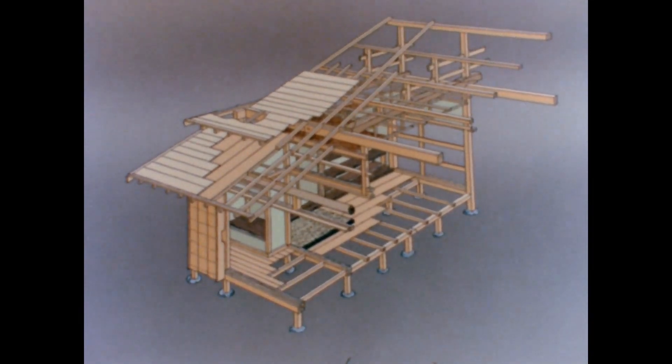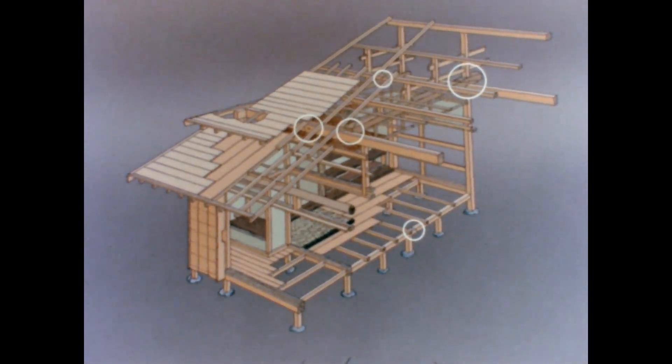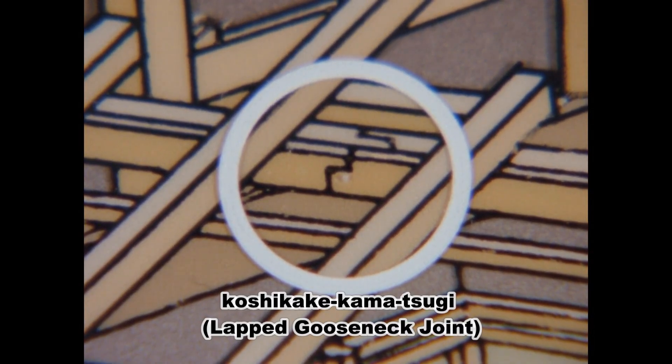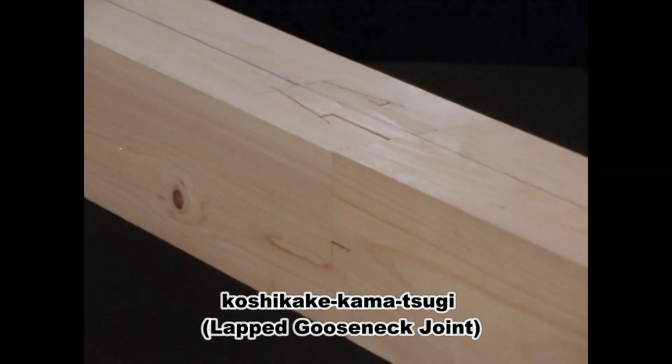There are numerous methods for joinery and Sikuchi, and they are selected based on factors such as tension, bending, and twisting stresses depending on the intended use within a building. One such method, the Kosikakakamatsugi or Lapsch gooseneck joint, is commonly used in various parts such as beams, pillars, and foundations due to its strength against tension.